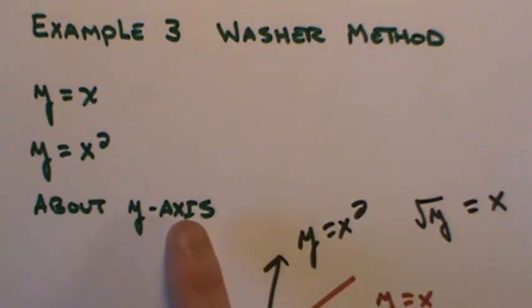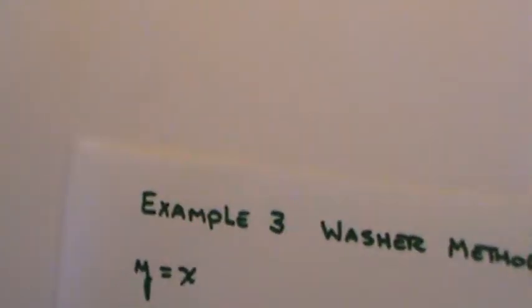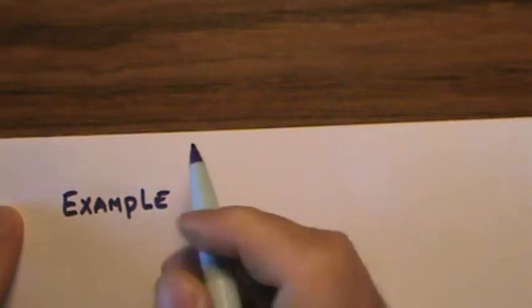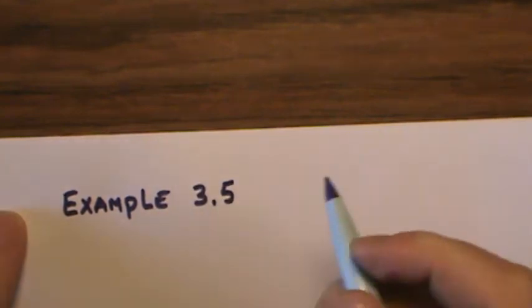Now, I'm not quite done. I think I'm going to do an example 3.1 because I think we're ready to go to the next level. So far we've been very nice to you about our axes of revolution. We're going to call this example 3.5.